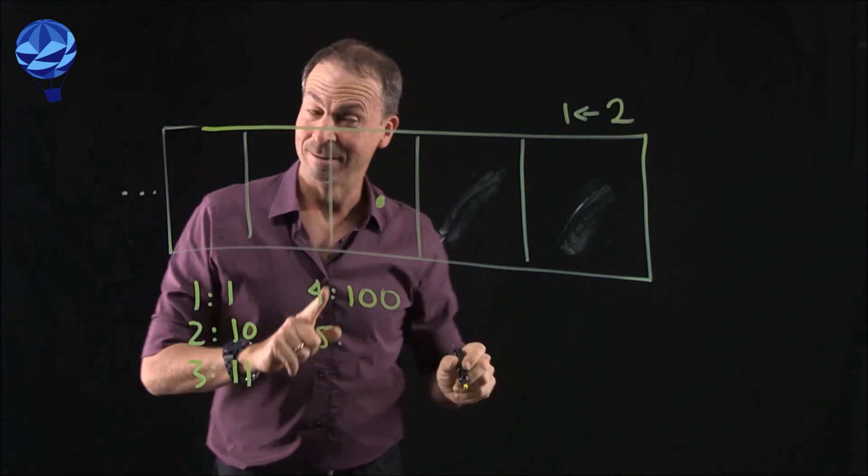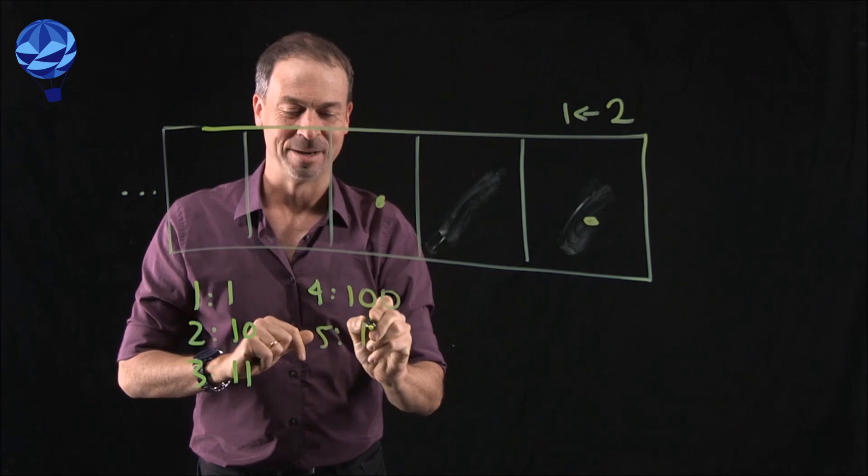Can you see what the code for five is going to be? Zoom. One, zero, one.